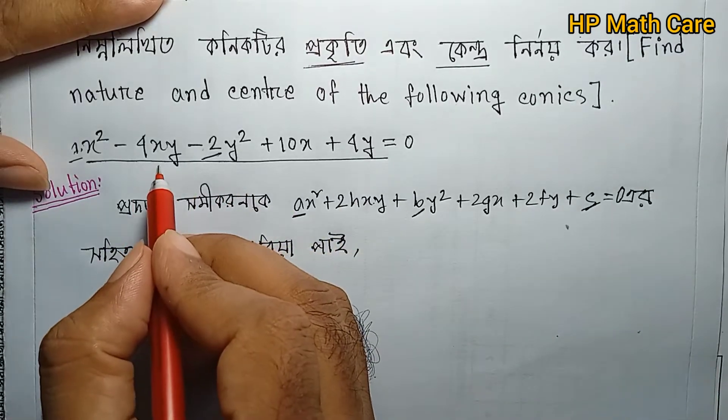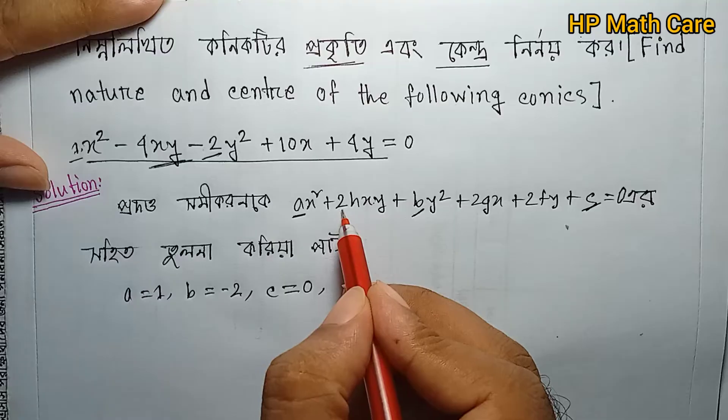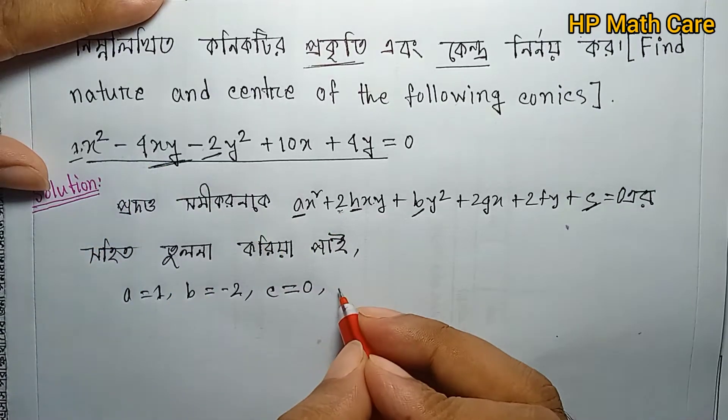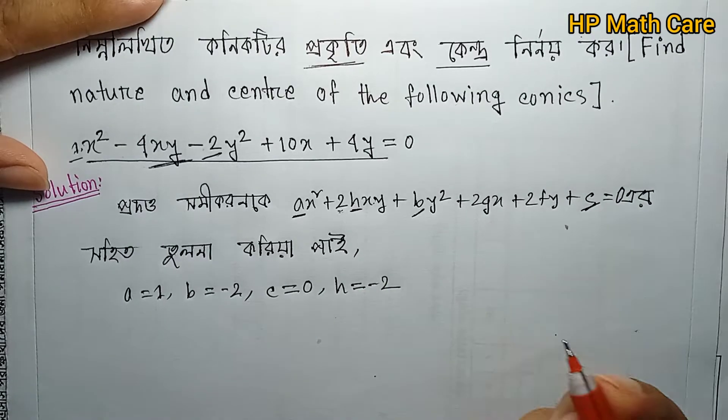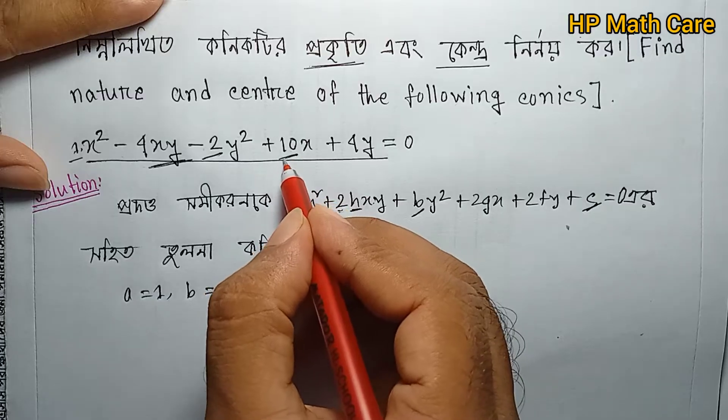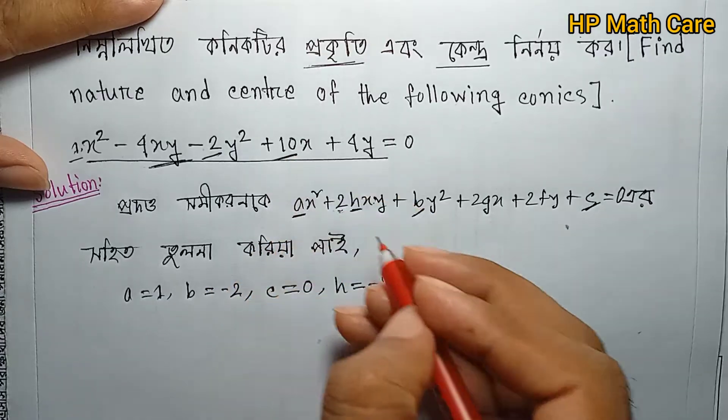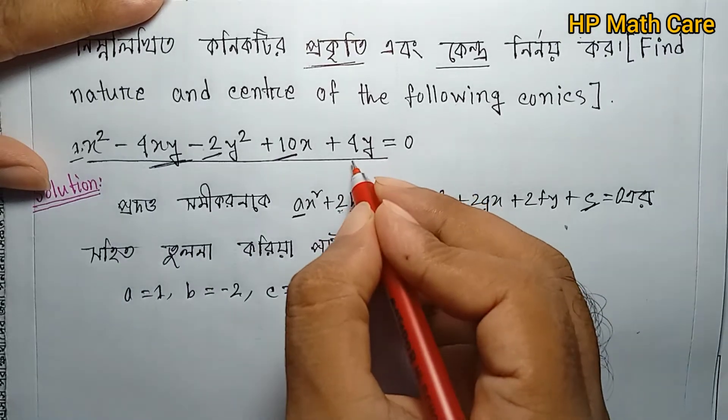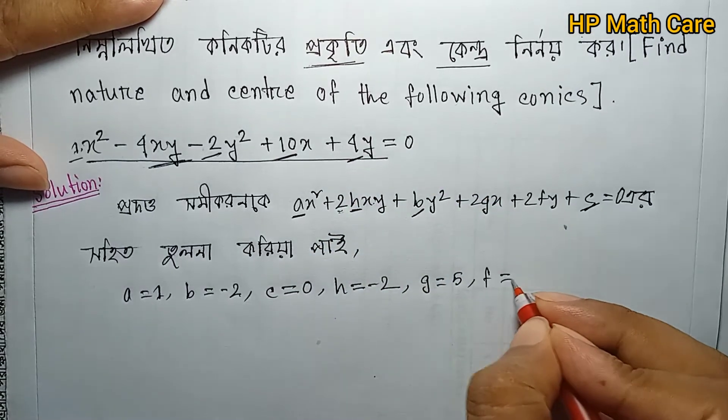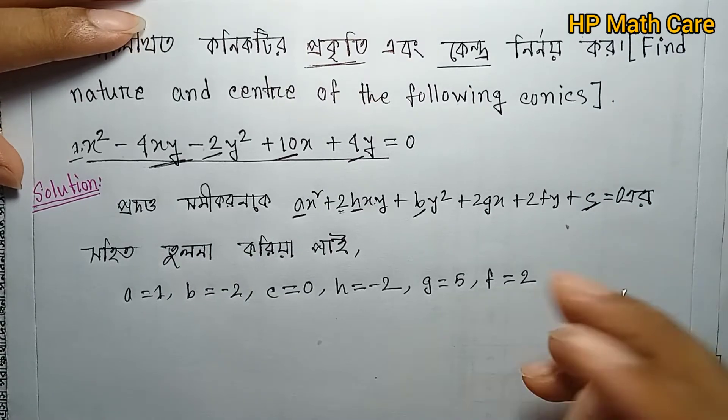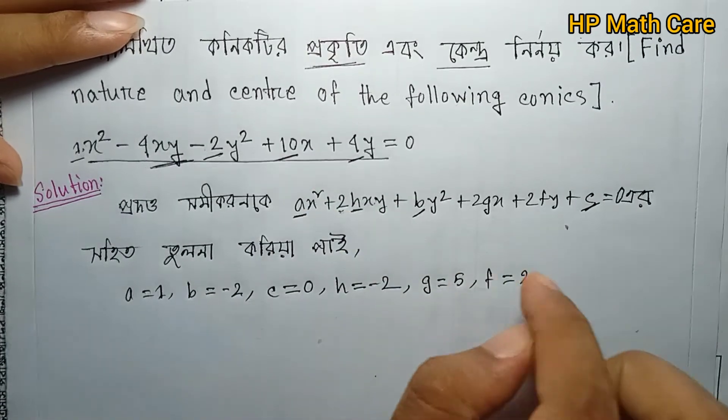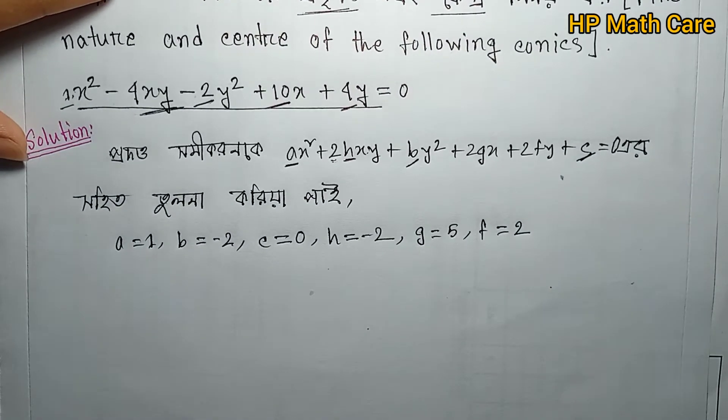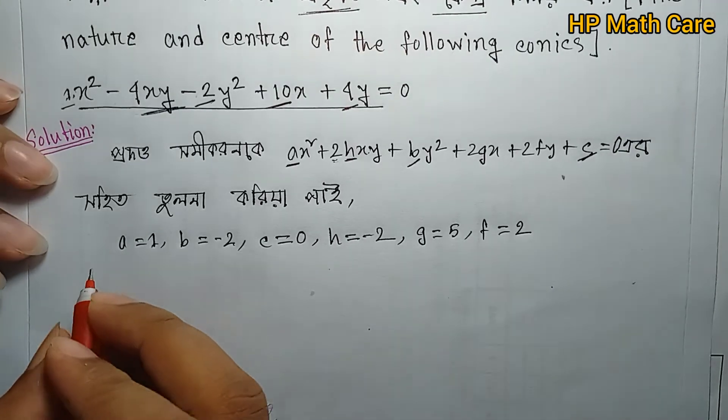The coefficient of x is 10, so 2g = 10, which gives g = 5. The coefficient of y is 4, so 2f = 4, which gives f = 2. The constant term c = 0.